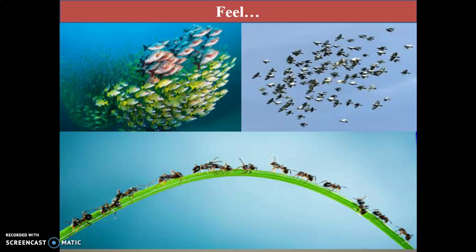Swarm Intelligence is seen in ant colonies, fish schooling, and bird flocking. These collections are each called a Swarm — an ant colony is a Swarm, birds flocking is a Swarm, fish schooling is a Swarm, and a bee colony is also a Swarm. This Swarm exhibits some intelligence, and that is known as Swarm Intelligence. Together these ants, bees, fishes, or birds work for a common goal in a decentralized system.